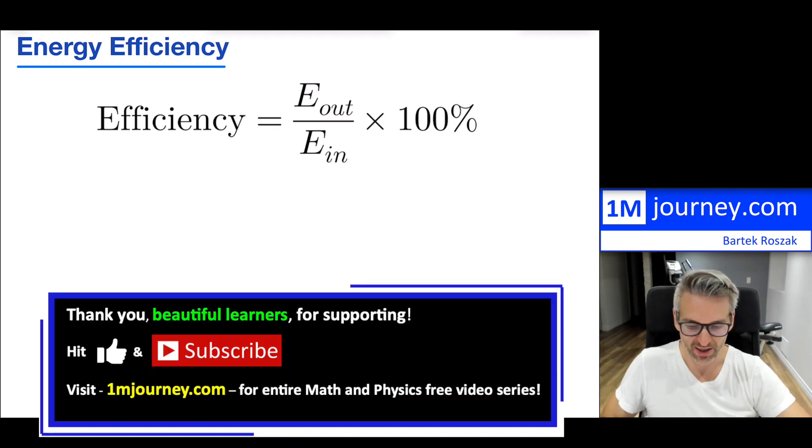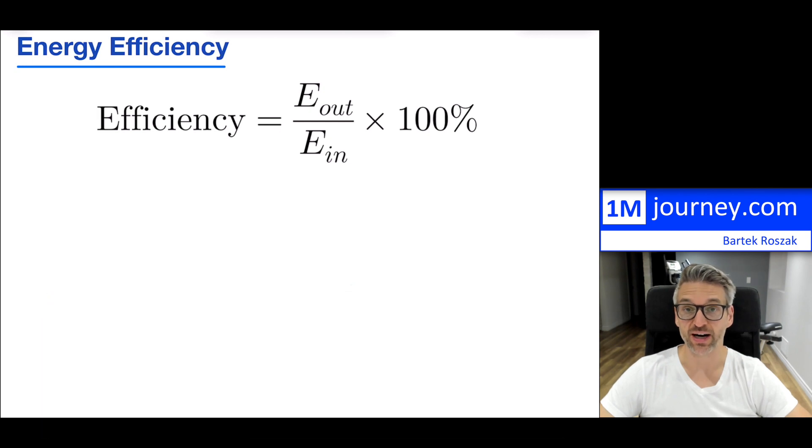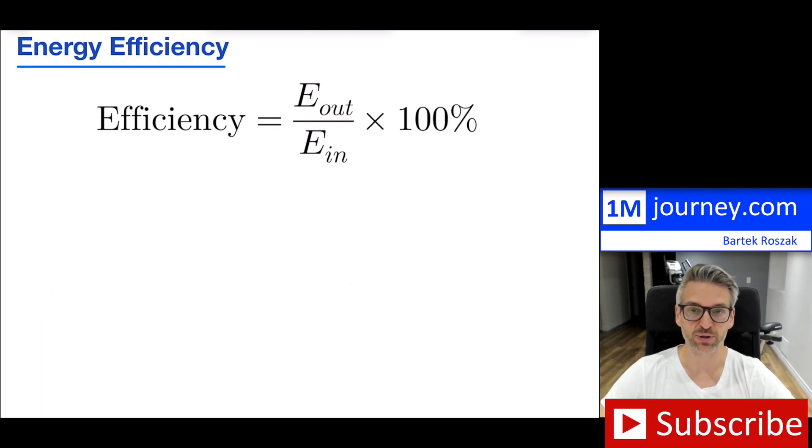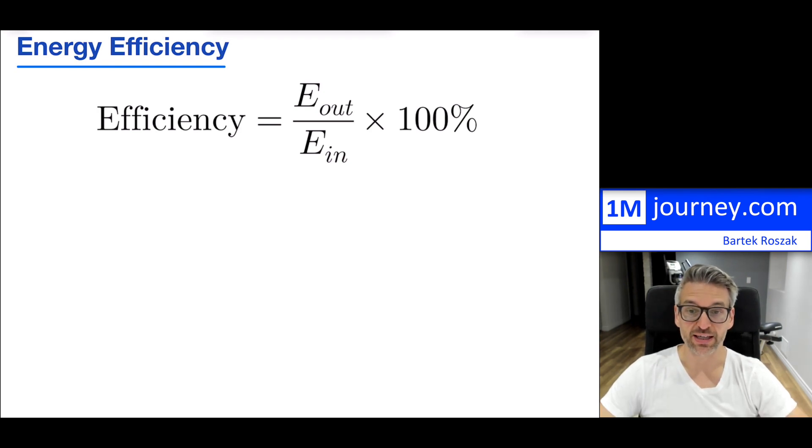So what is energy efficiency? Well, here's the formula for it. Efficiency is equal to the energy that you have outputted divided by the energy that you have inputted into a particular system, and that efficiency typically is given in percent, although it doesn't have to be.